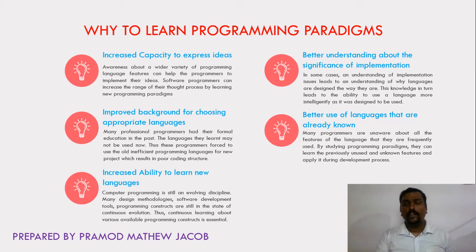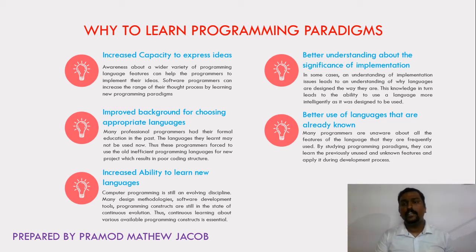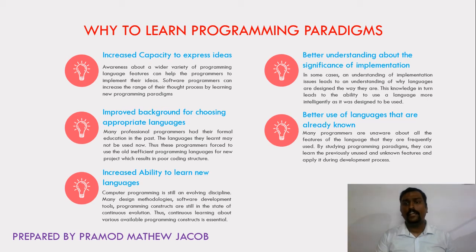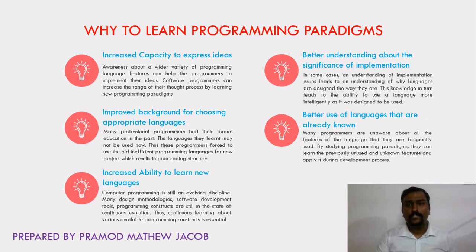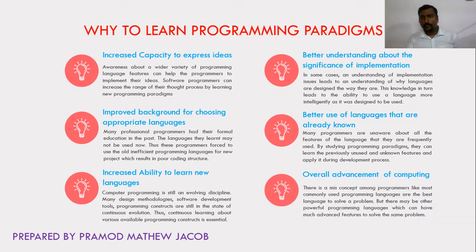Next is better use of languages that are already known. Many programmers are unaware of all the features of languages they already know. For example, we may have learned C and Python in our graduation, but we are not fully aware of all their features. Because of this unawareness we may not be able to code a particular idea efficiently. Learning standard generic programming paradigms can help programmers utilize all the available features of the languages they already know.